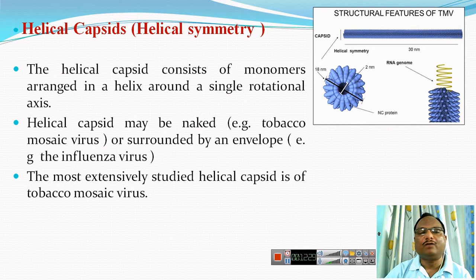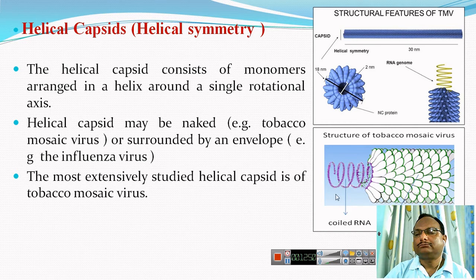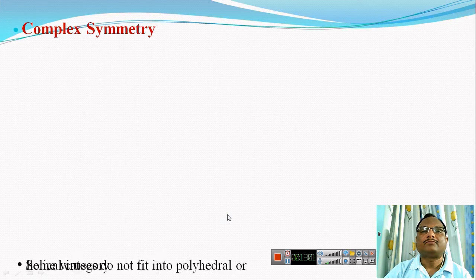The most extensively studied helical capsid is that of tobacco mosaic virus. Its subunits are arranged in a helical manner around a coil of single-stranded RNA, giving the virus its rod shape — meaning its width or diameter is less than its length.